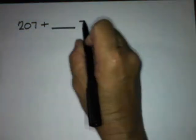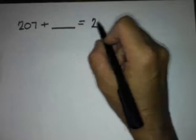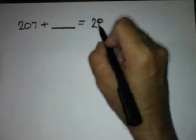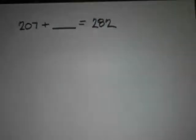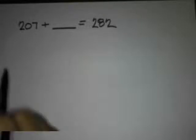207 plus the unknown equals 282. We have an unknown — we have a missing addend. So we can use a quick picture to find out what the missing addend is.